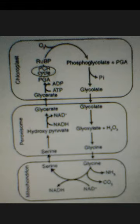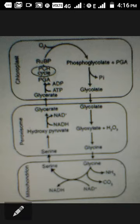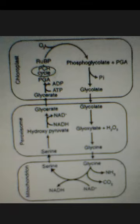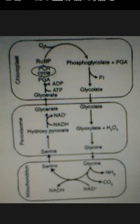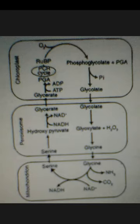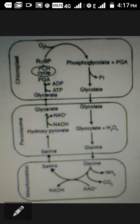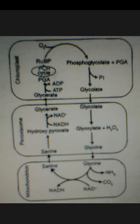In the mitochondria, glycine gets converted into serine. This is one of the most important steps of photorespiration, where the products are CO₂, ammonia, and NADPH₂. These are the three different organelles participating in the proper sequence.